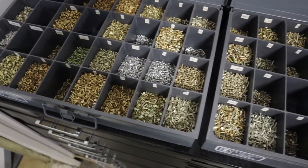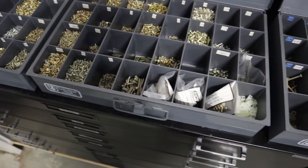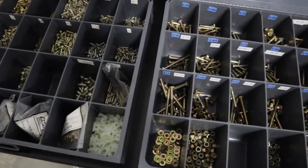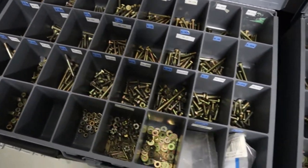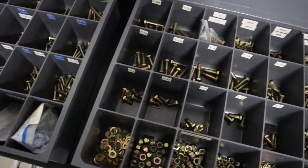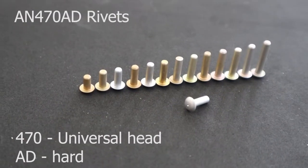Welcome back. Today we're going to talk about aircraft hardware. There's going to be a large variety of hardware that you're going to use on your aircraft, specifically here looking at rivets and bolts. We'll talk about how they're labeled and take some confusion out of what to look for and what exactly it means.